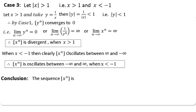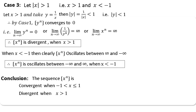Clubbing all the cases: the sequence x^n is convergent when −1 < x ≤ 1; it is divergent when x > 1; and it oscillates finitely when x = −1 and oscillates infinitely when x < −1. Thank you very much.